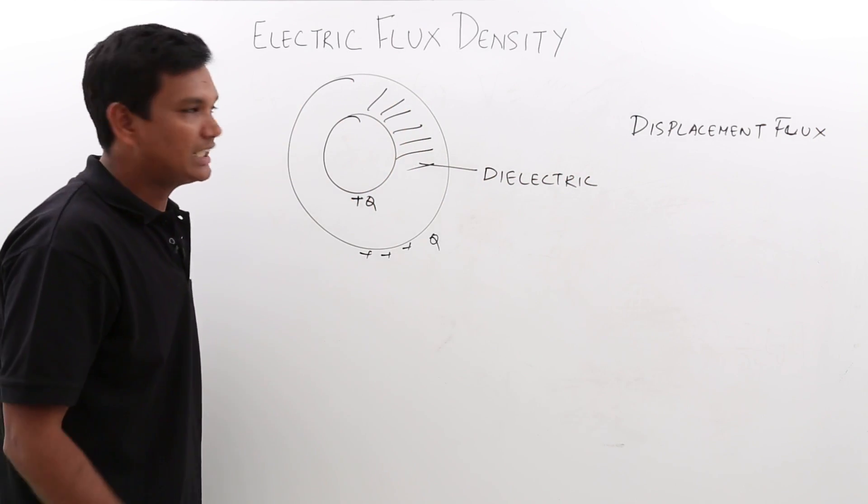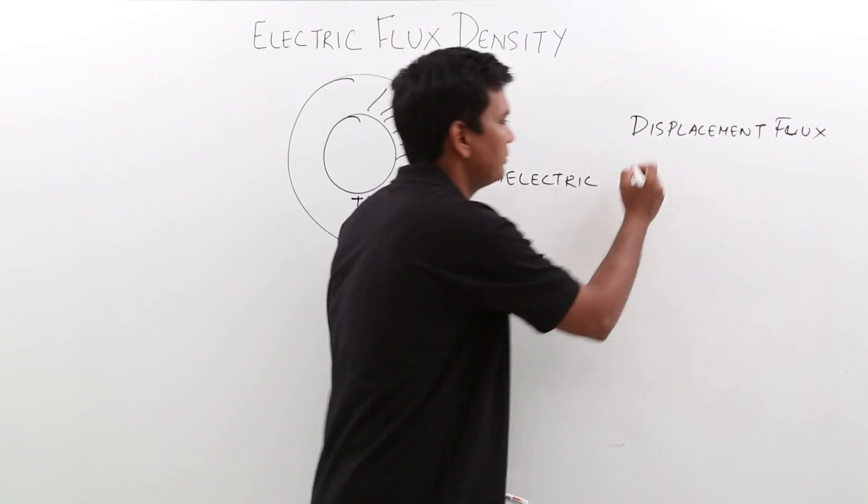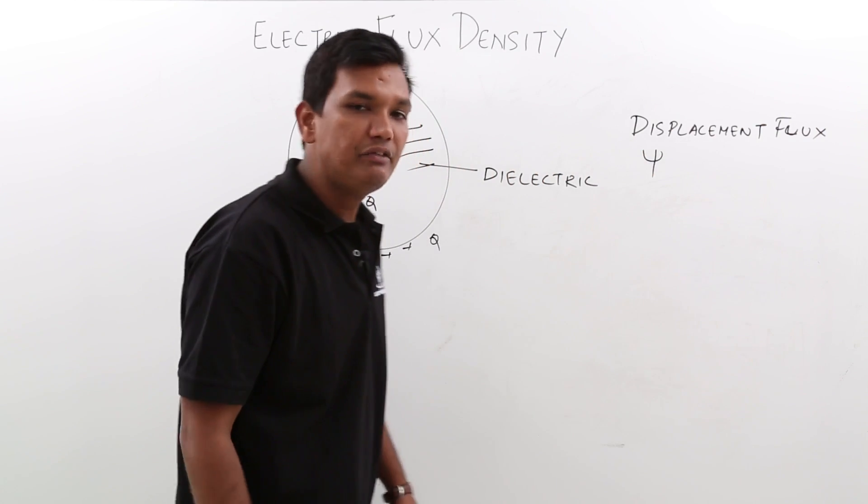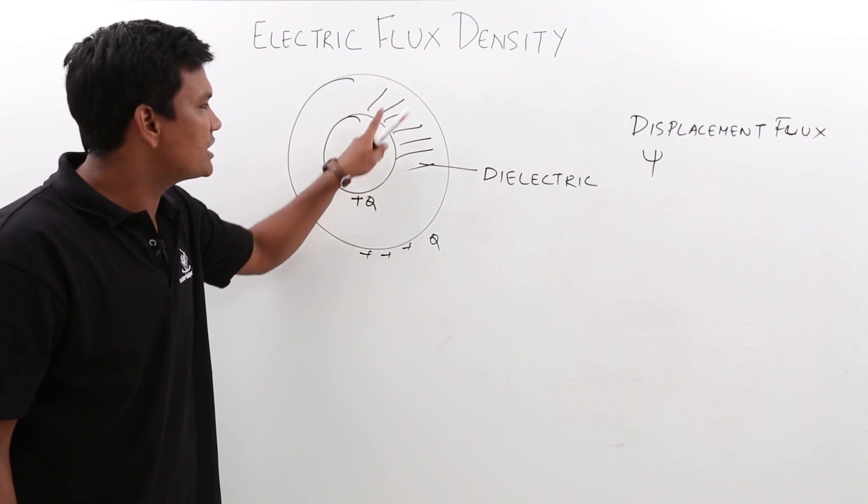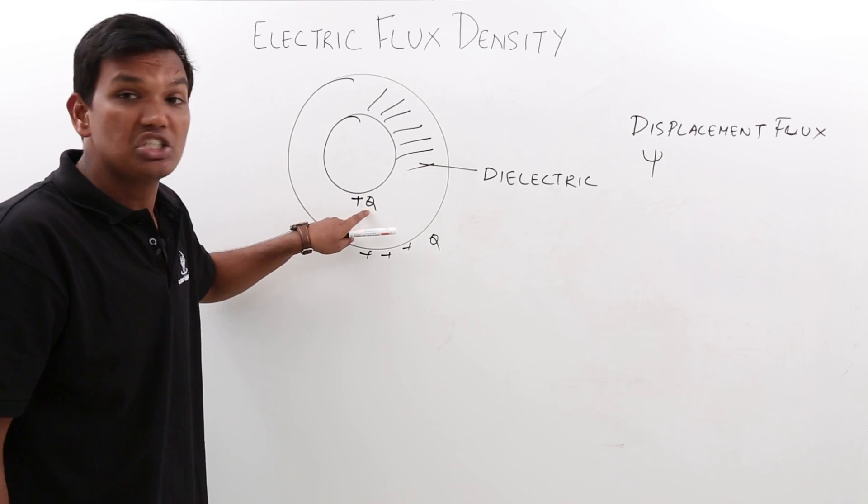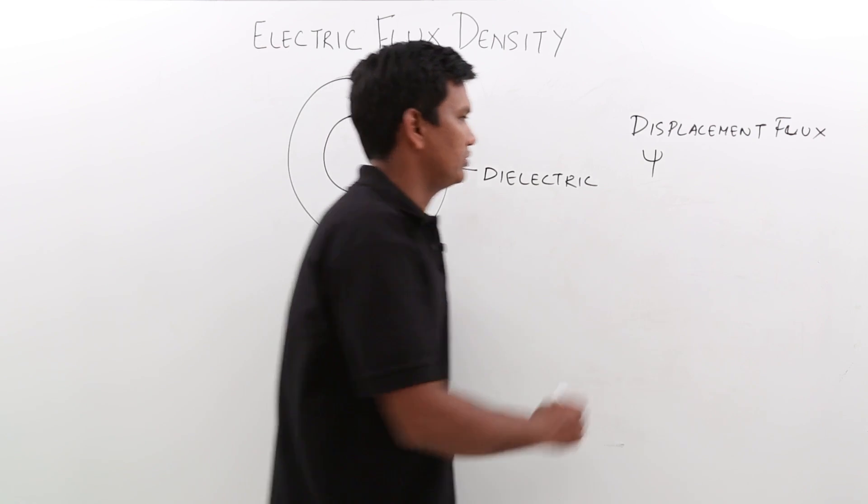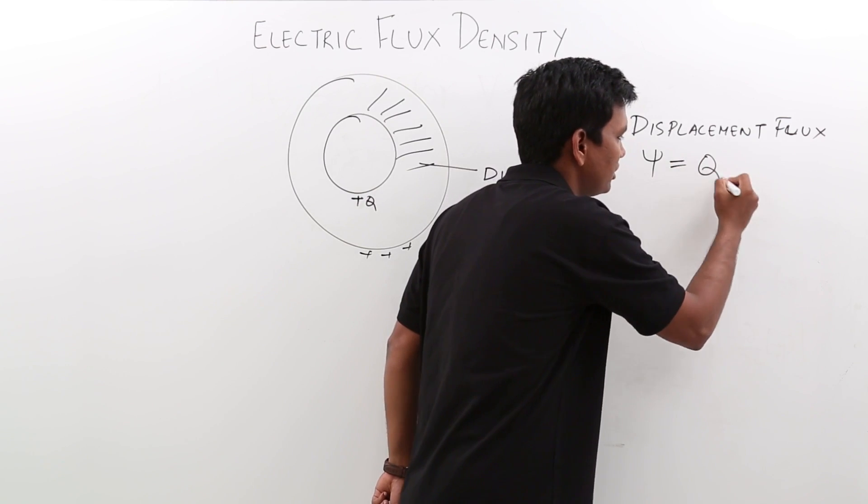That displacement flux is given by a symbol called ψ, and he was saying that the displacement flux is equal to the charge enclosed by the inner sphere, which ultimately comes out to be q.